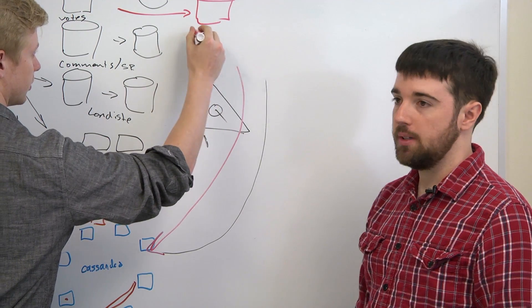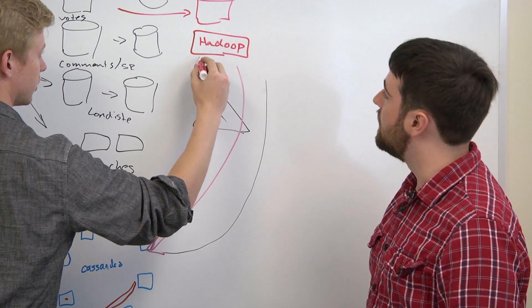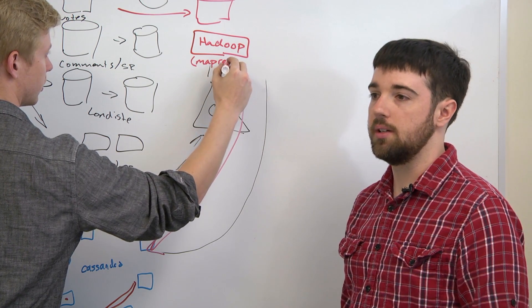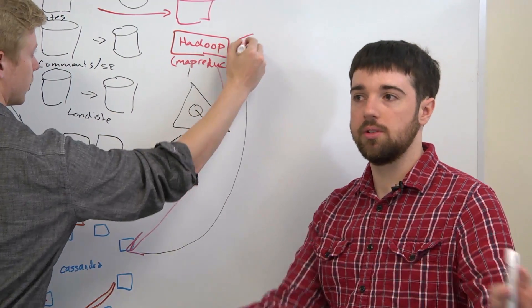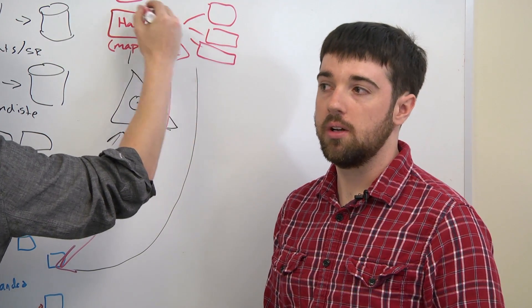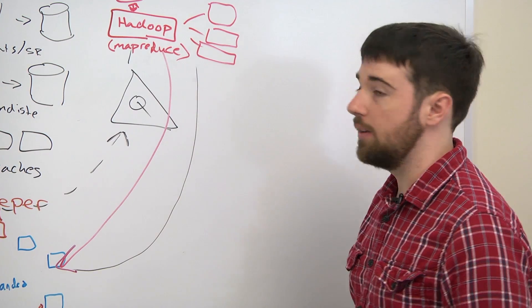Hadoop is a MapReduce system, and it has the advantage of handling all the details of distributing these mappers and reducers across a cluster of nodes. And we're actually using Amazon's Elastic MapReduce, which is hosted Hadoop, to make our lives simpler.